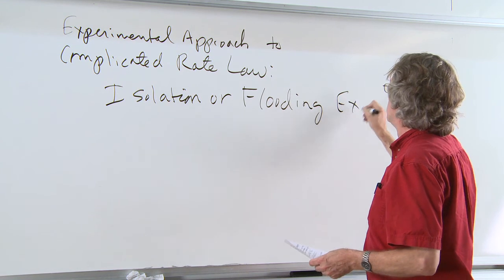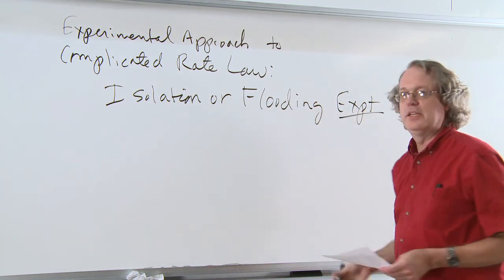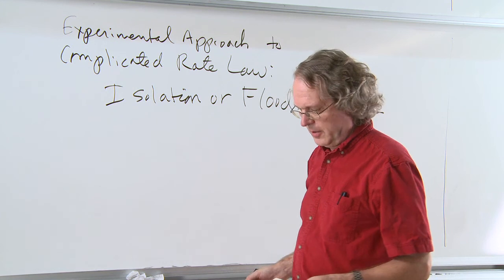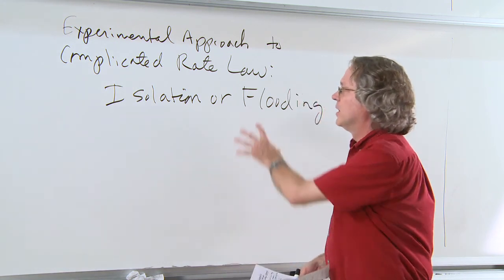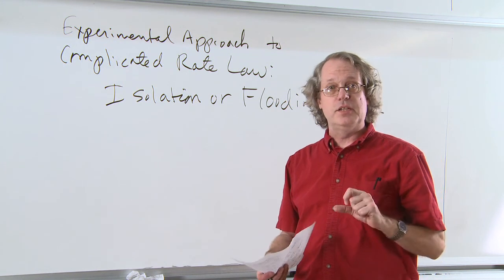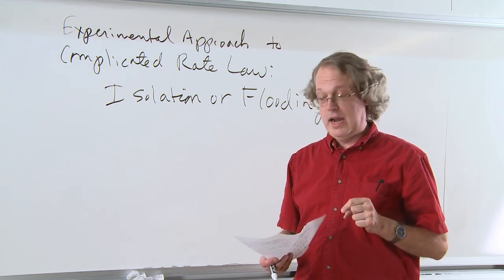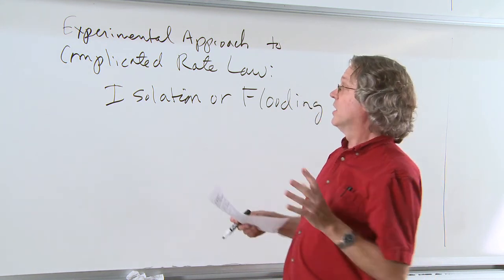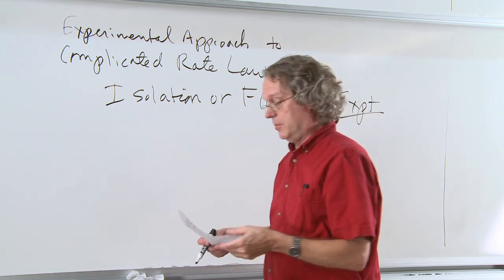I'm going to use the abbreviation EXPT because I don't like to write experiment all the time. So what you do in this kind of an experiment is you make the concentrations of all species but one very, very high. In order to understand this, let's look at an example.